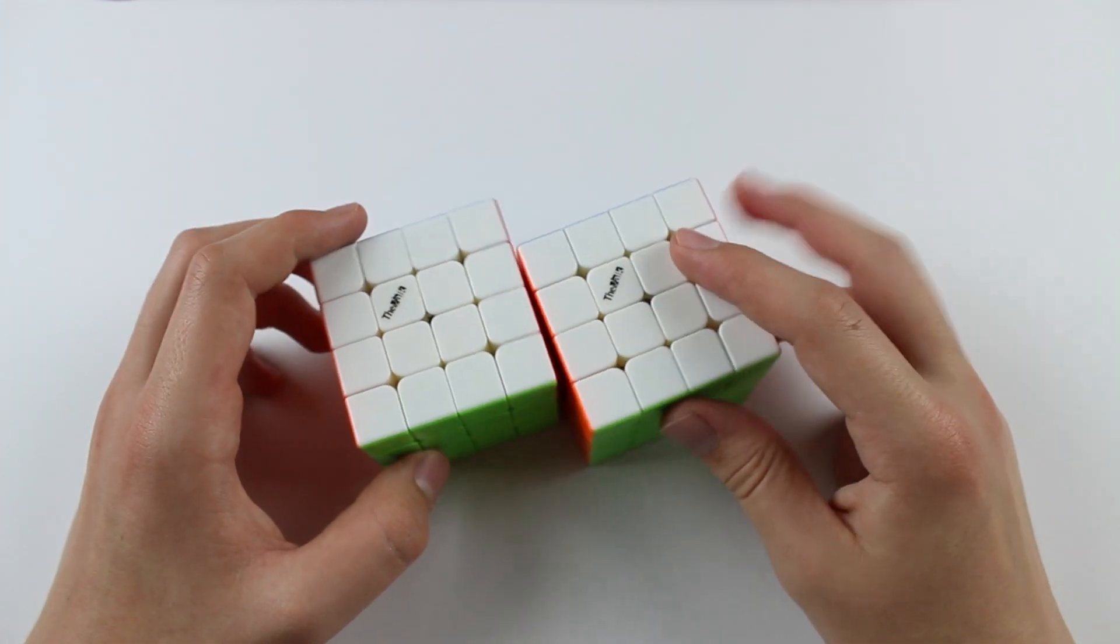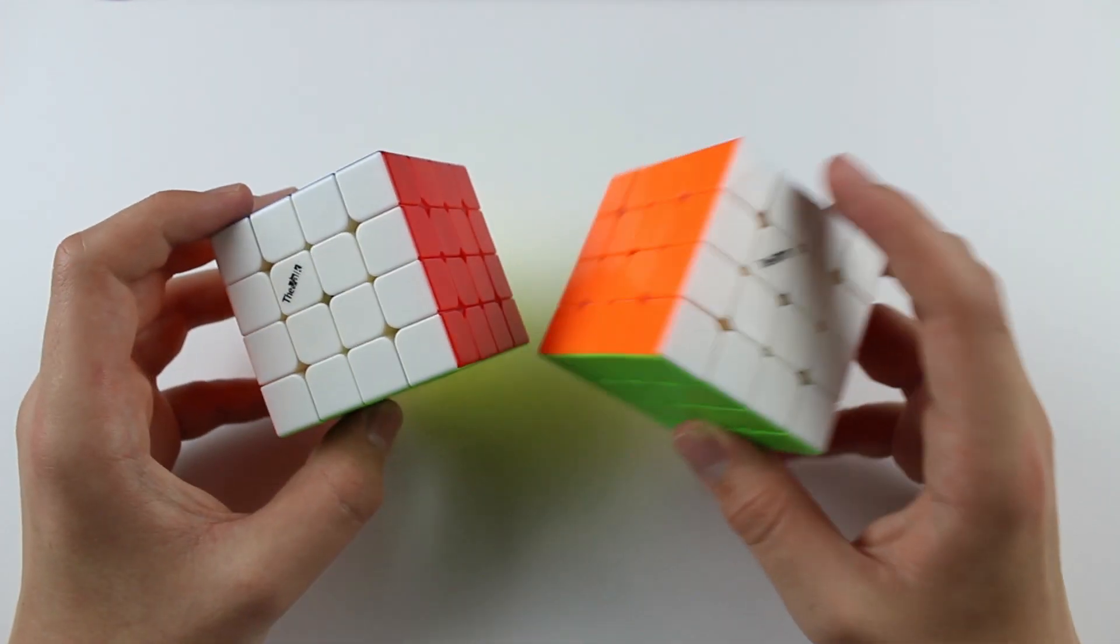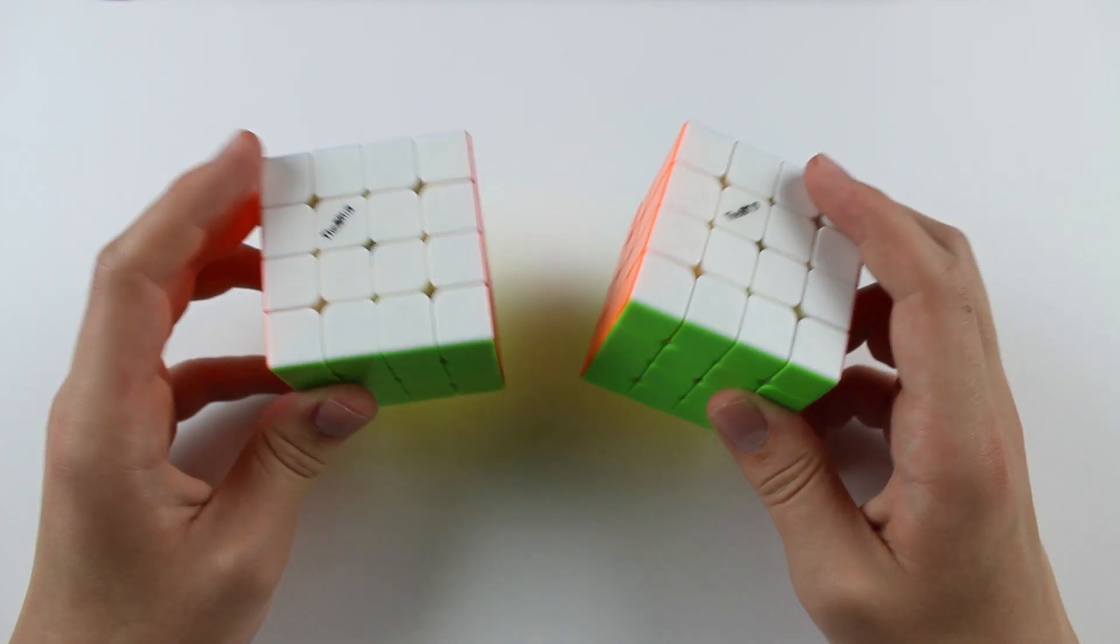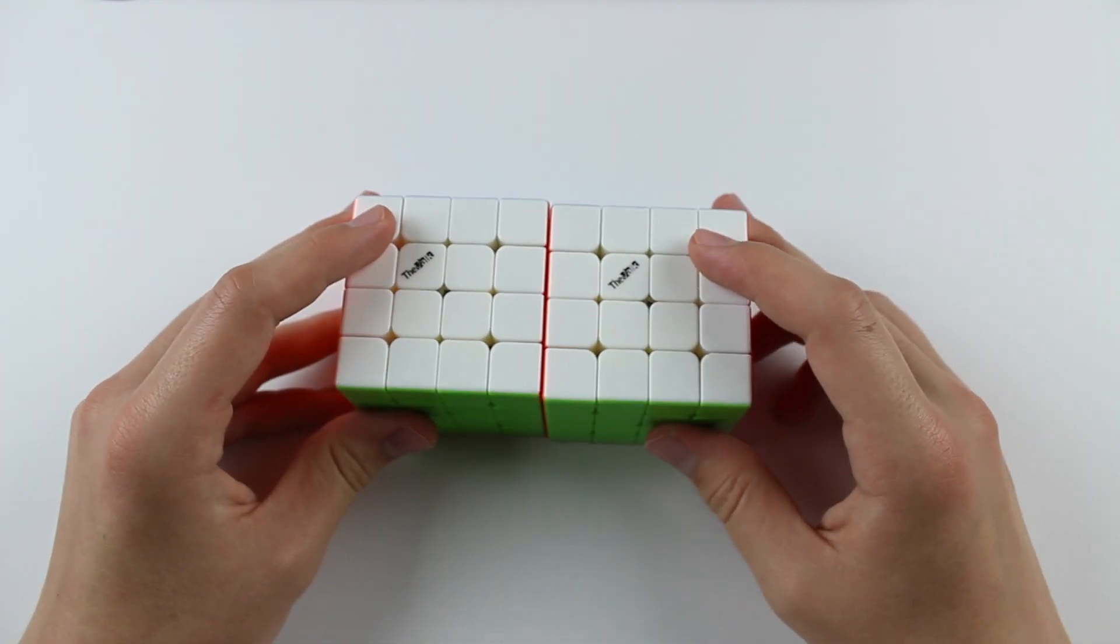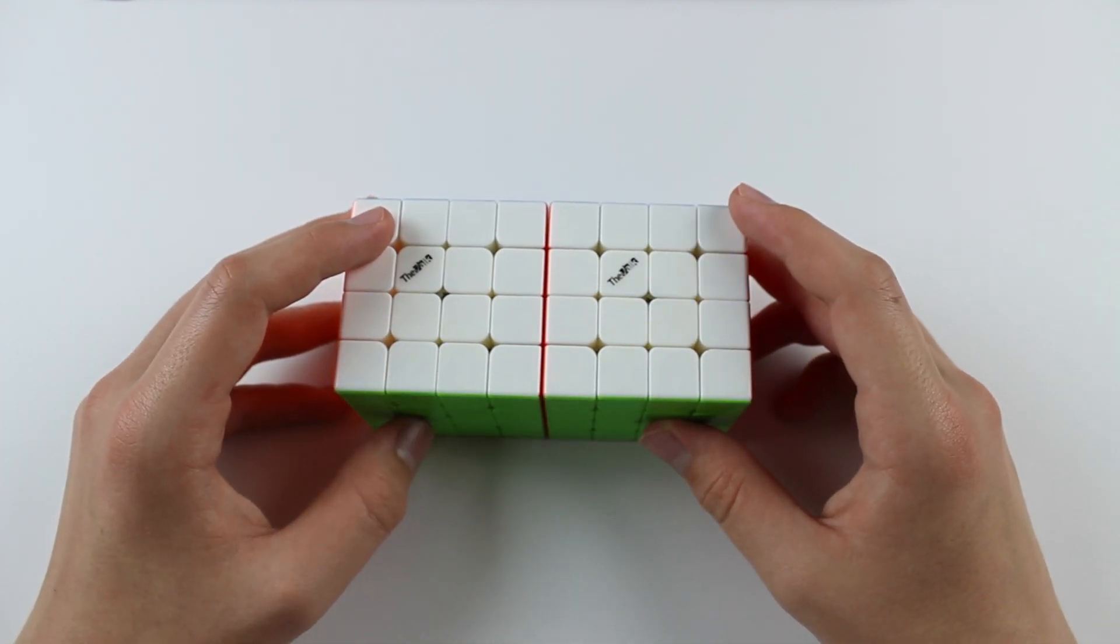These two cubes are around $40. This one's $40, this one's $37. And they are both magnetic 4x4s that recently came out from Chi, who also made the Valk3 and Valk2.